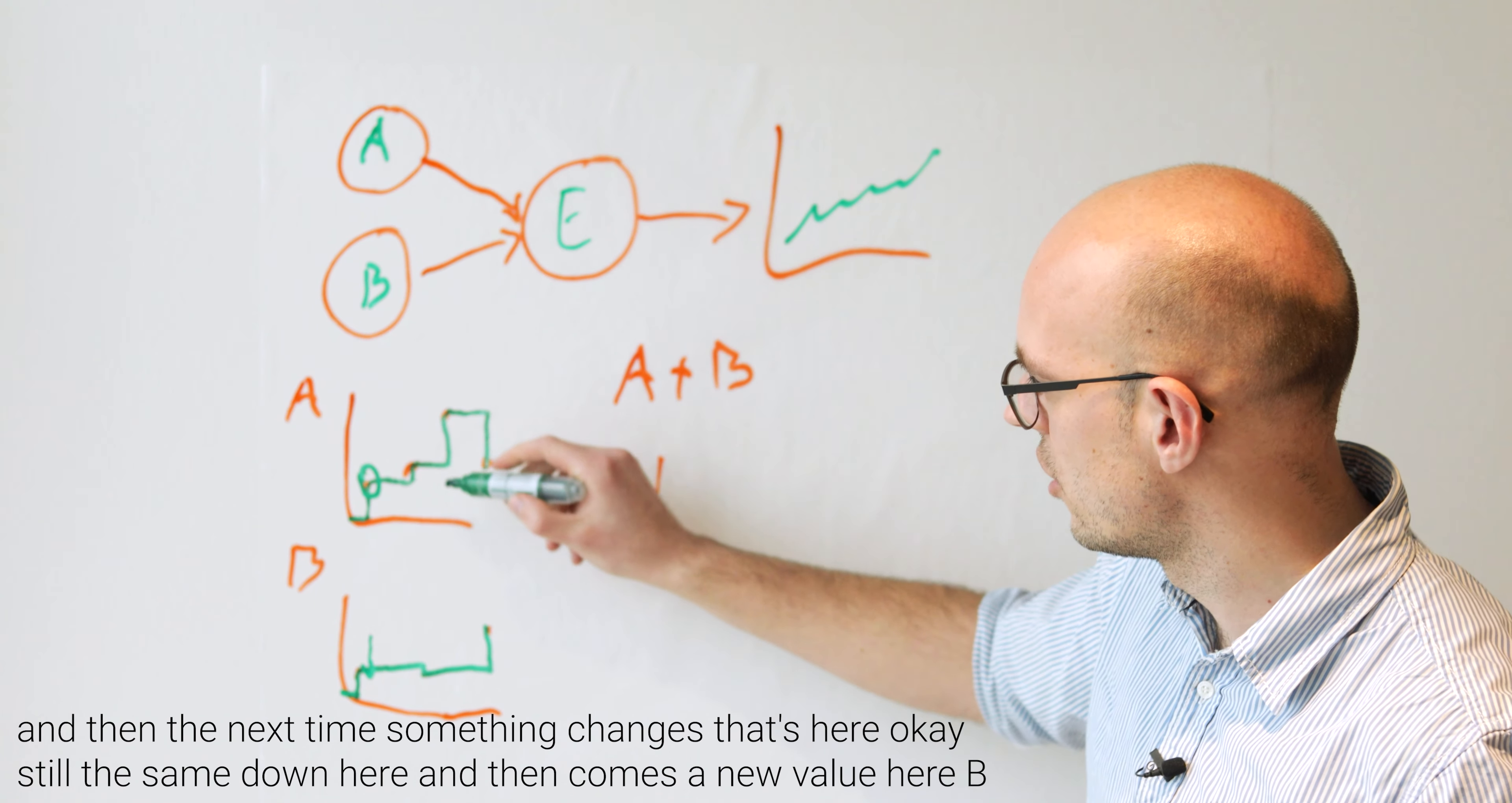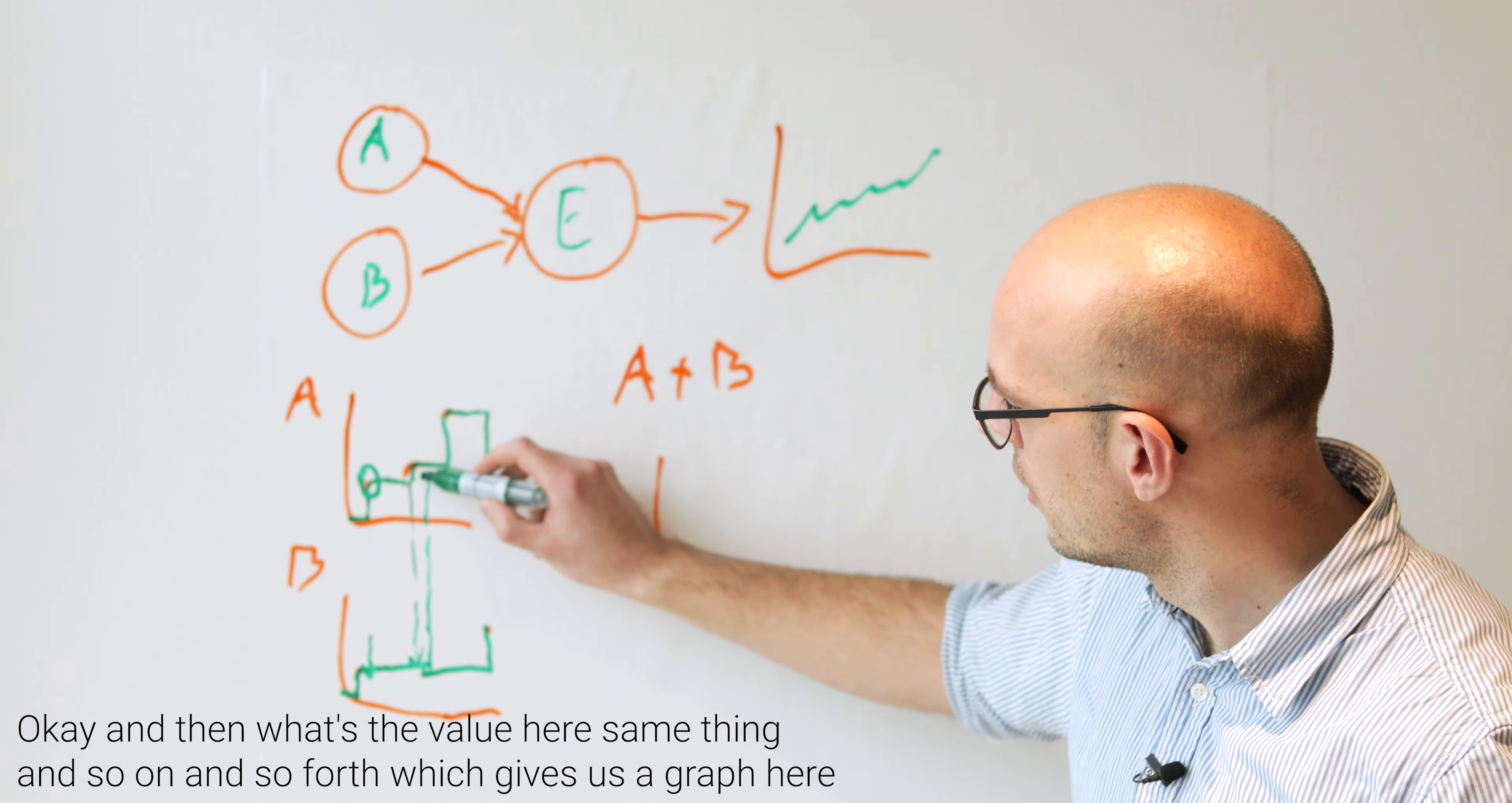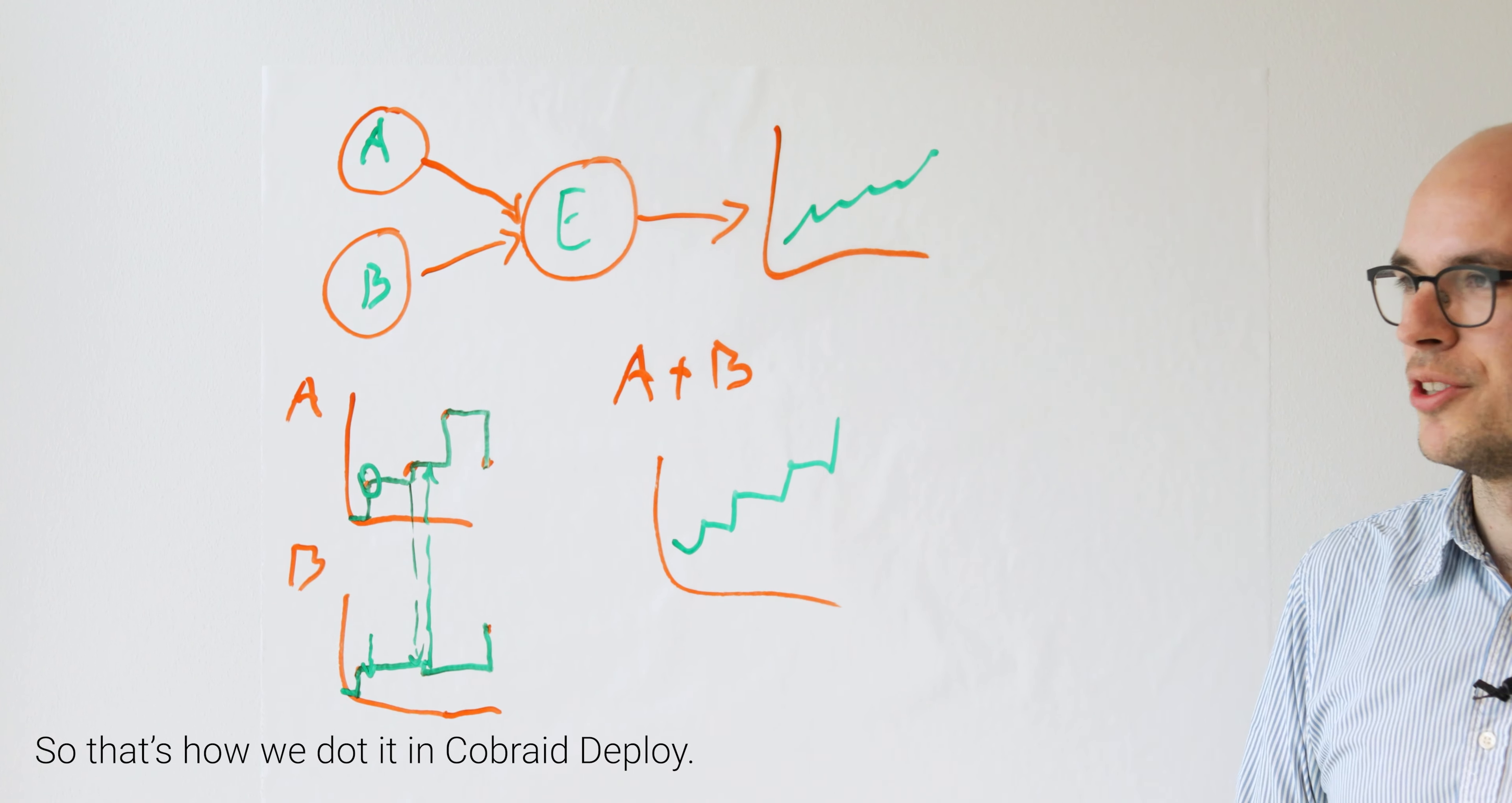And then the next time something changes, that's here. Okay, still the same down here. And then comes a new value here in B. Okay, and then what's the value here? Same thing and so on and so forth, which gives us a graph here, you can see in Cobraid Deploy. So that's how we do it in Cobraid Deploy.